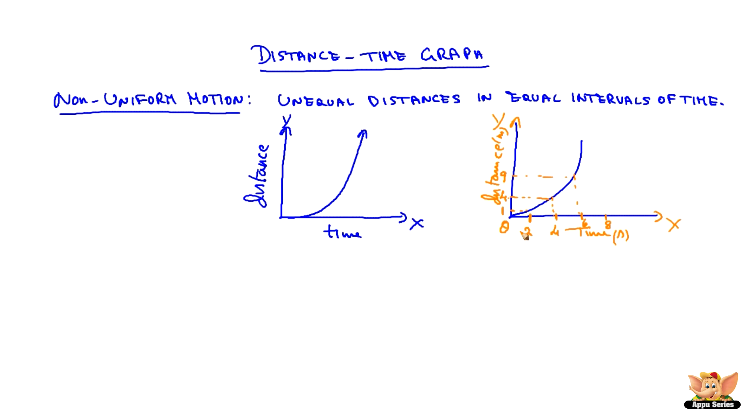And if we notice, on the time axis, the time intervals are the same. Whereas on the y-axis, the distance traveled at different time intervals is different. So from this, you can make out that the distance-time graph for non-uniform motion is a curved line.